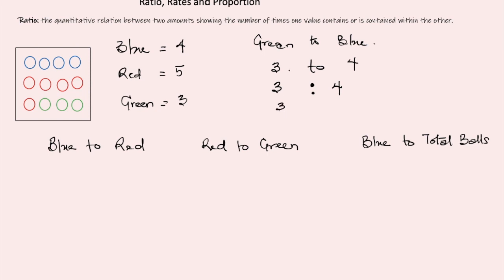We can also express ratios as fractions, so we can write the ratio of green balls to blue balls as 3 over 4. This is not to be confused with a normal fraction, because a normal fraction says three parts of a whole of four. Here, 3 represents the number of green balls and 4 represents the number of blue balls — two totally different quantities.